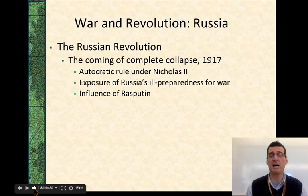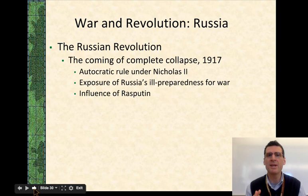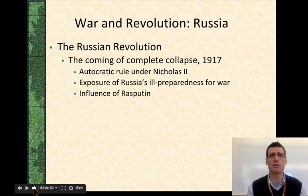Nicholas goes to the front lines and leaves influence in St. Petersburg, or Petrograd, to his wife, who's increasingly being influenced by this guy named Rasputin. The Tsarina believed that Rasputin had the ability to stop the blood disease that one of her children had, so she basically turned over all kinds of things to him. He started taking over the government, and eventually he gets assassinated.